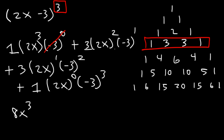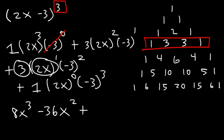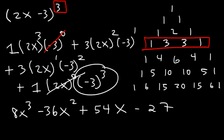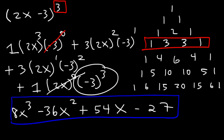Next, we have 3 times 2 squared — 2 squared is 4 — times negative 3, that's negative 12, times the 3 out front, giving negative 36x squared. Then we have 3 times 2x — that's 6x — and negative 3 squared is 9, so 9 times 6x is 54x. For the last term, 2x to the zero is 1, and negative 3 to the third power is negative 27. So this is the answer — 8x cubed minus 36x squared plus 54x minus 27 — which is the same as what we got in the last example.